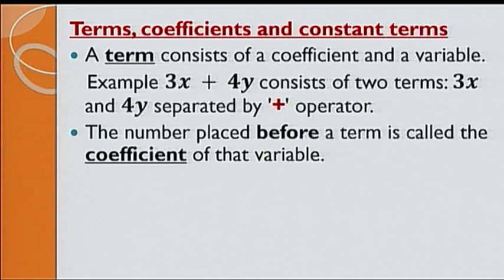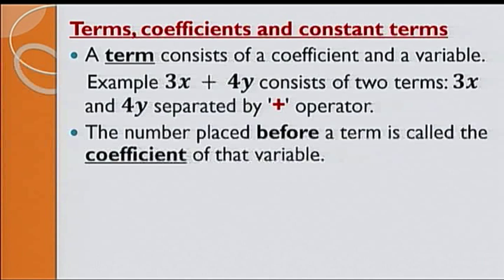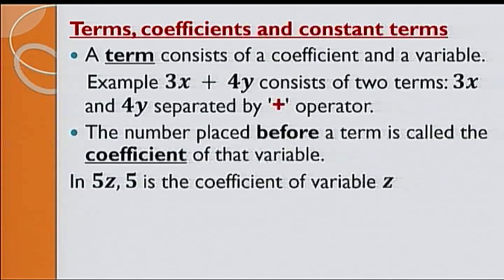In 5z, 5 is the coefficient of variable z. A constant term is a term with no variable. For example, in x plus 6, 6 is the constant term.